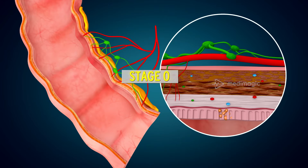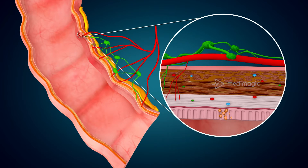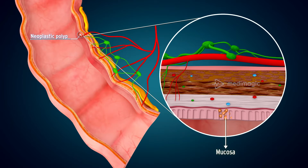Stage 0: In this stage, tumor cells begin to appear in the mucosal layer and then proliferate into the epithelial layer. At this stage it can be seen as a benign neoplastic polyp.